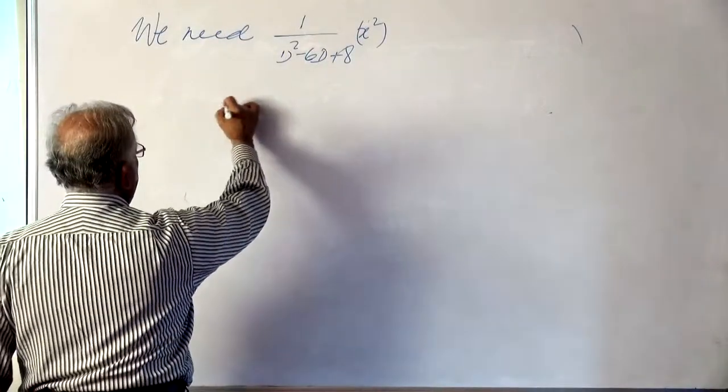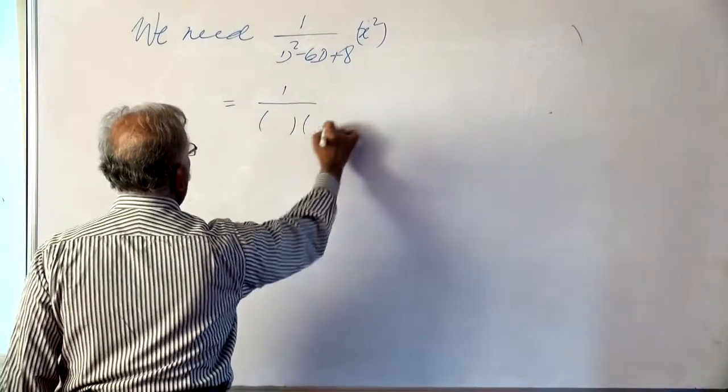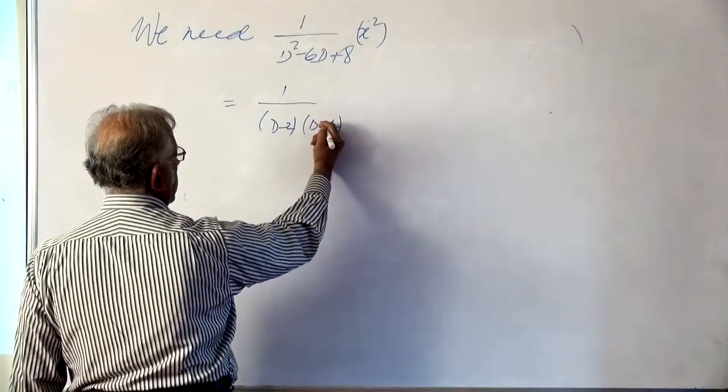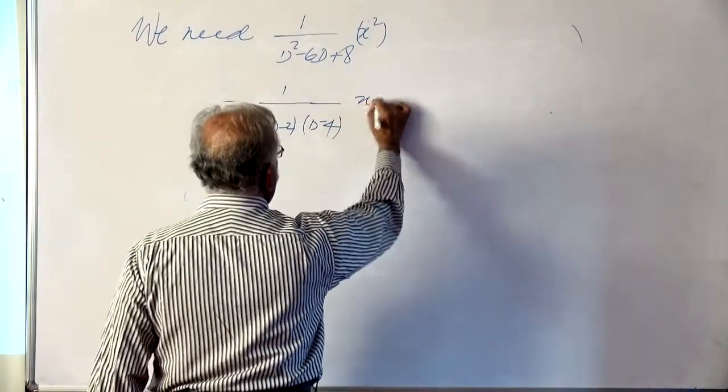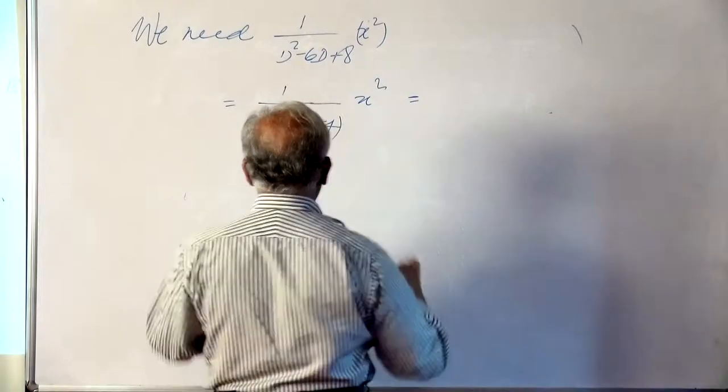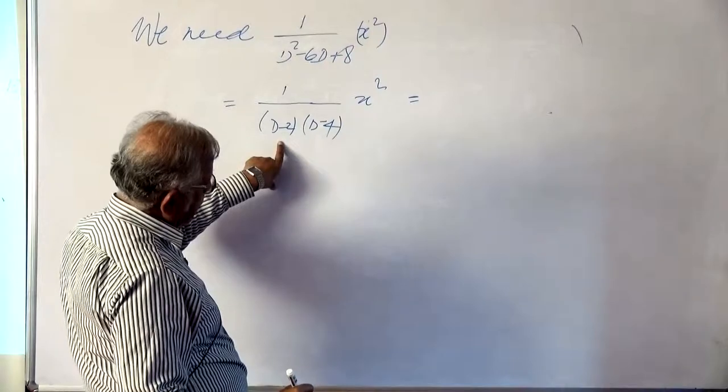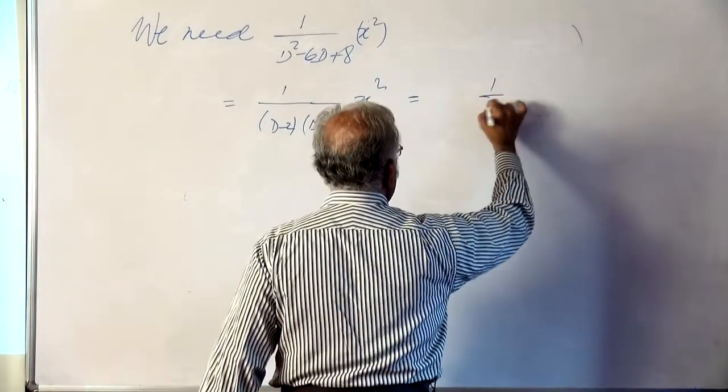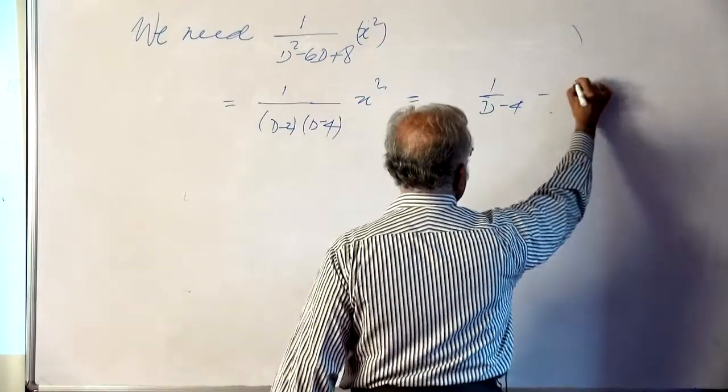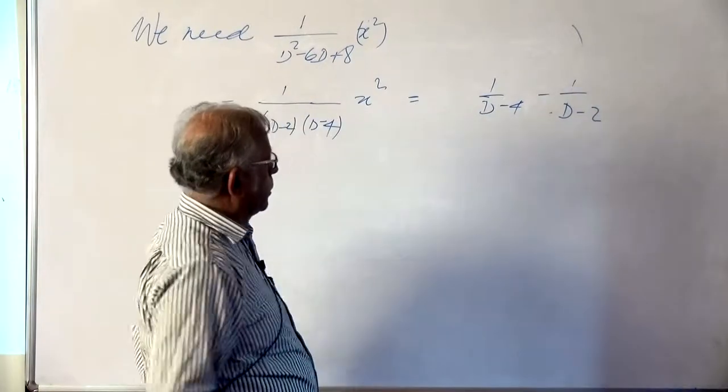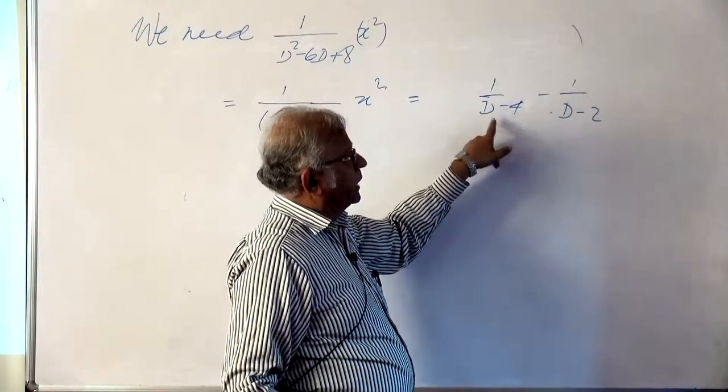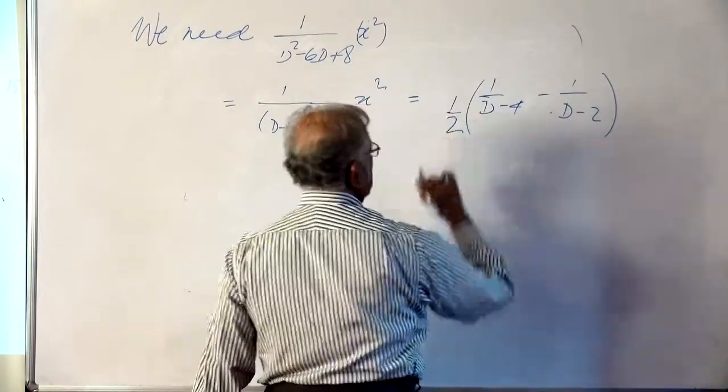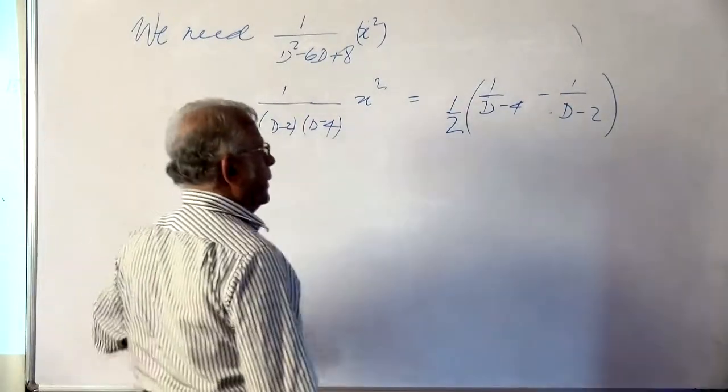This can be written as 1/[(d-2)(d-4)] operating on x². This is actually 1/(d-4) - 1/(d-2). When we open this out it is (d-2) - (d) + 4, so there will be a +2 factor on top. We adjust by making it 1/2.